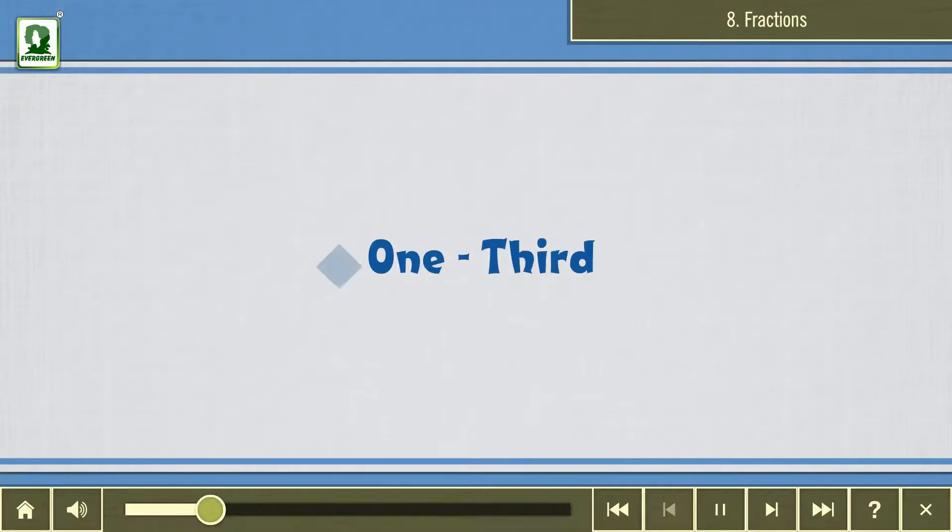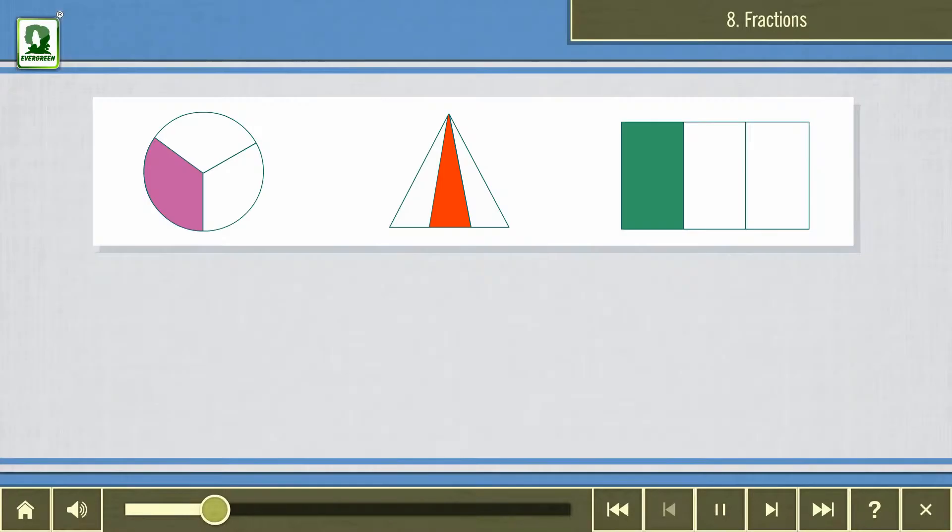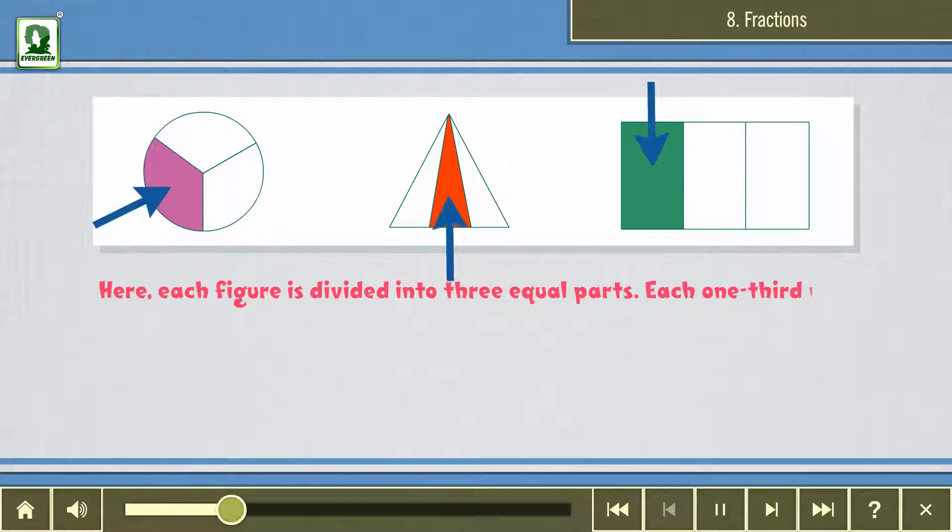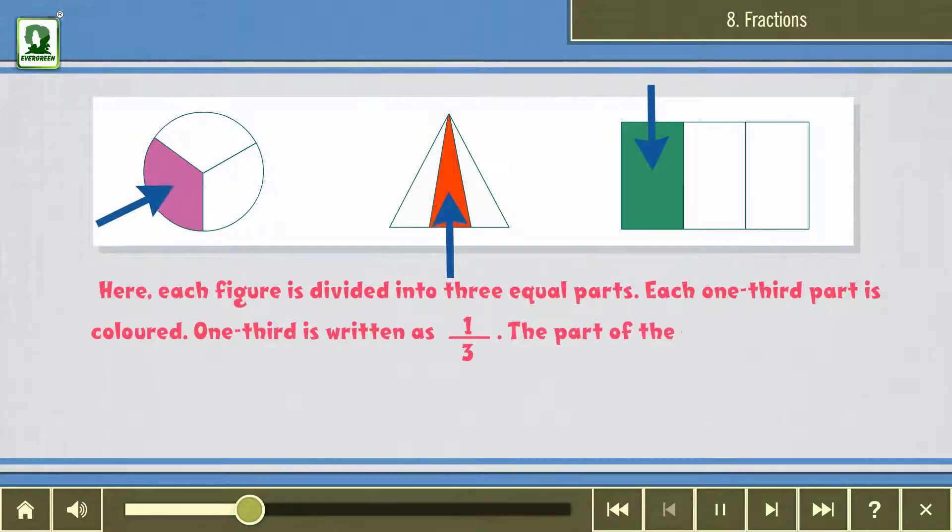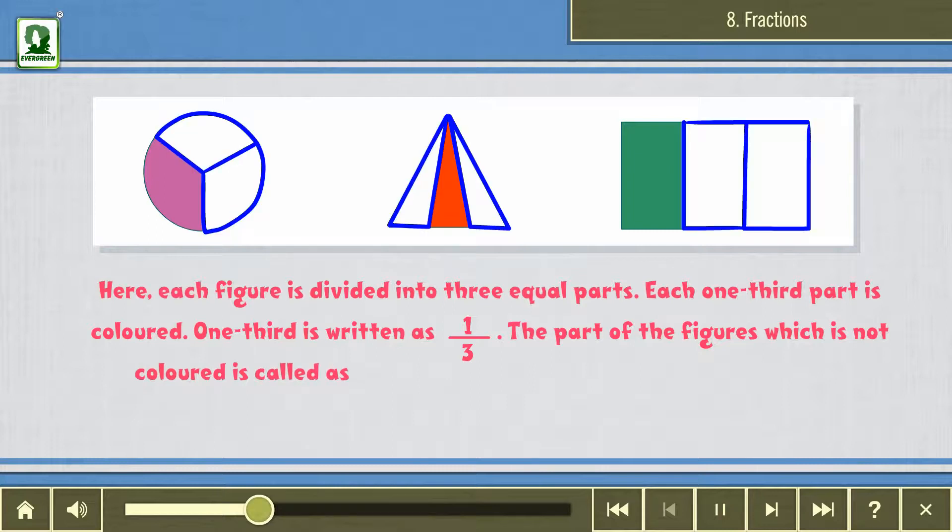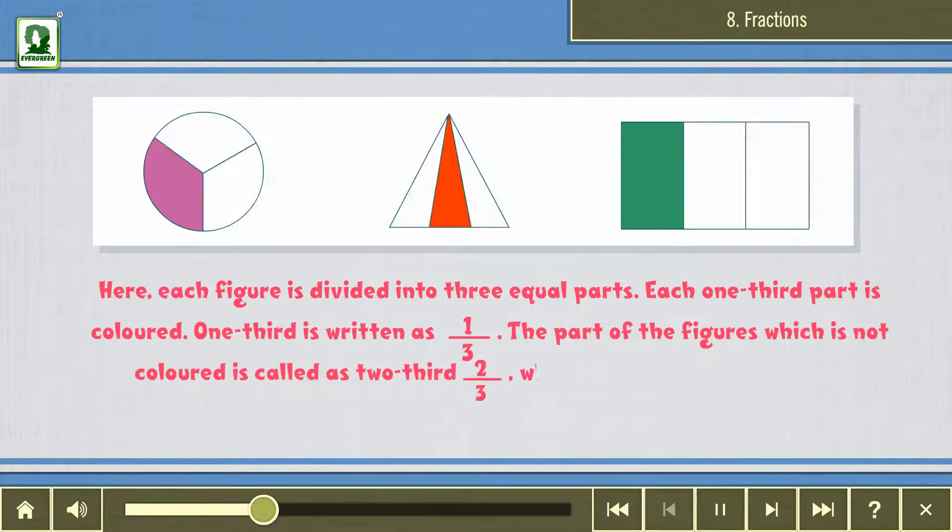One third. Here, each figure is divided into three equal parts. Each one third part is colored. One third is written as one upon three. The part of the figures which is not colored is called two third, which is also a simple fraction.